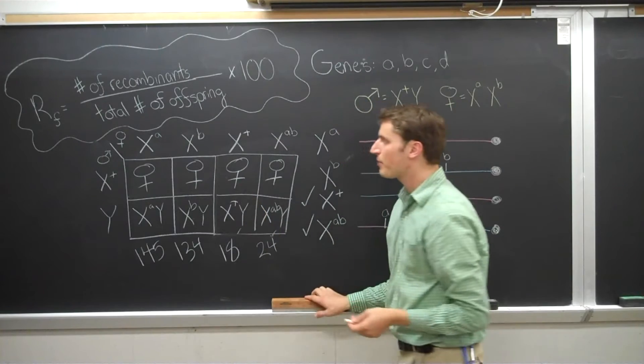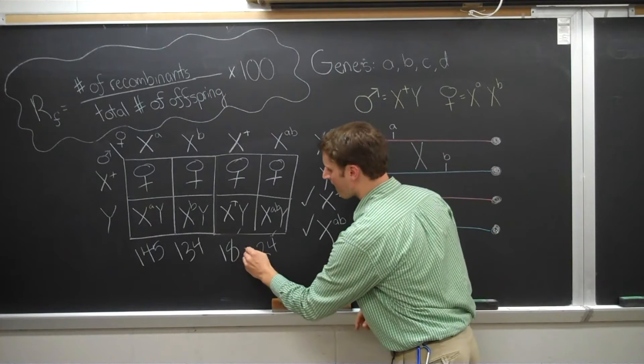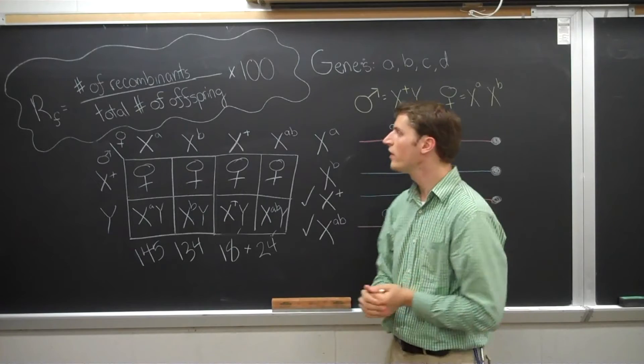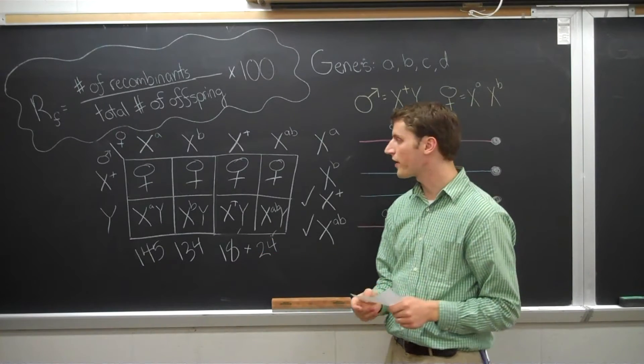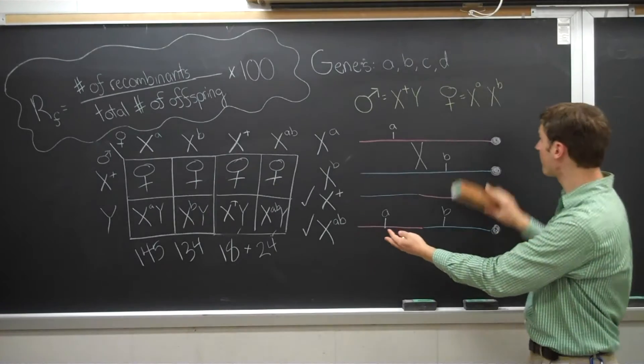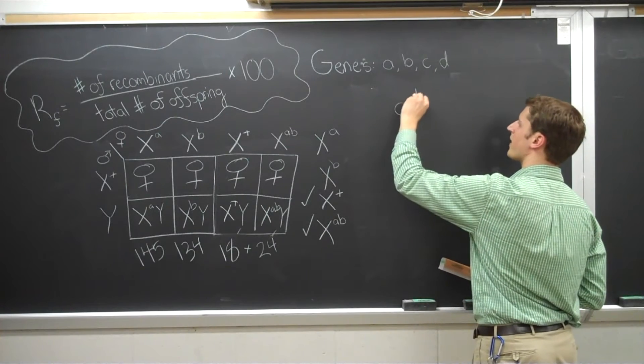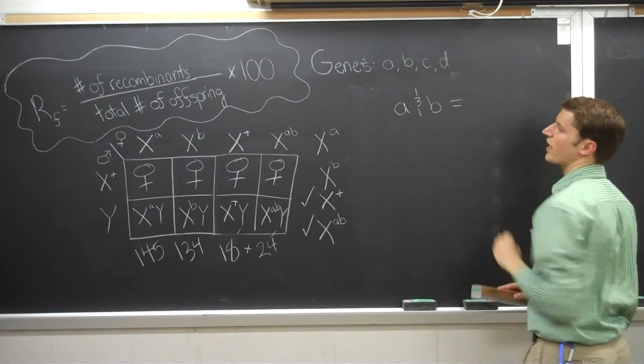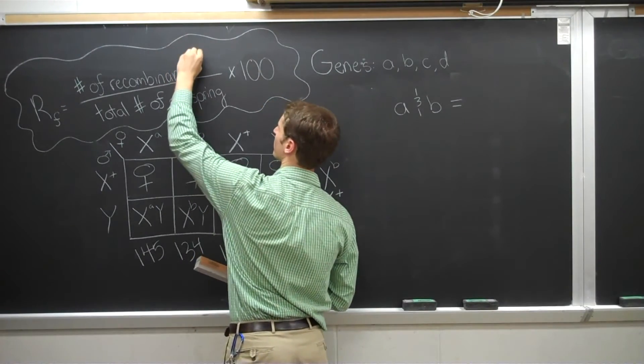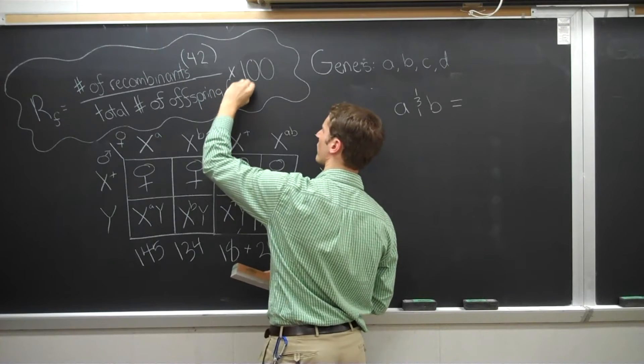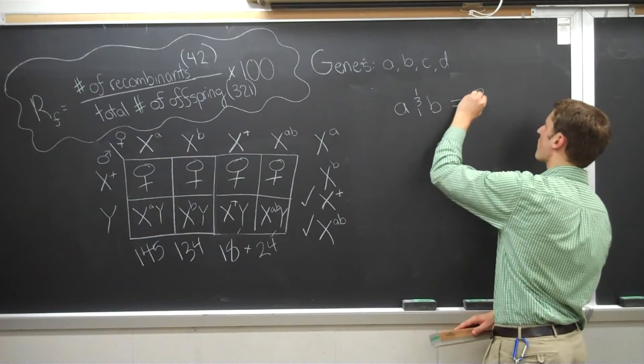Now, continuing on with our AB example, how can we calculate the recombination frequency? Number of recombinants, which would be 18 plus 24, 42. The number of recombinants divided by the total number of offspring. The total number of offspring in this case is 321. I'm going to erase this over here. So between A and B, the recombination frequency, when you run it through this, which would be 42 divided by 321 times 100, the recombination frequency is 13 percent.